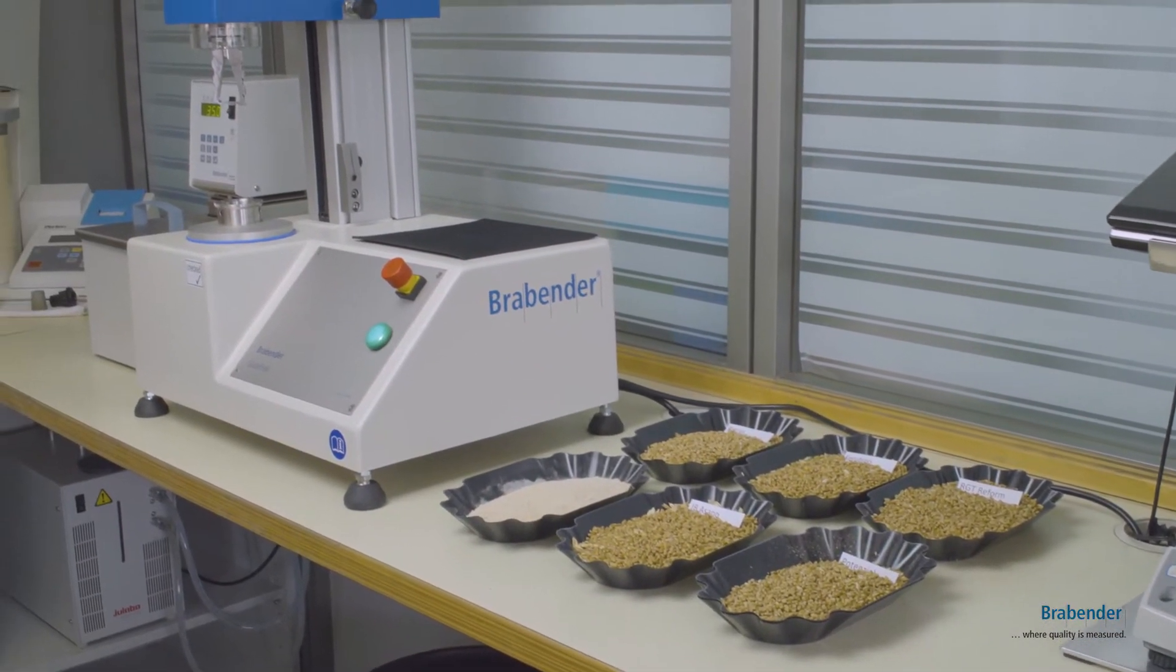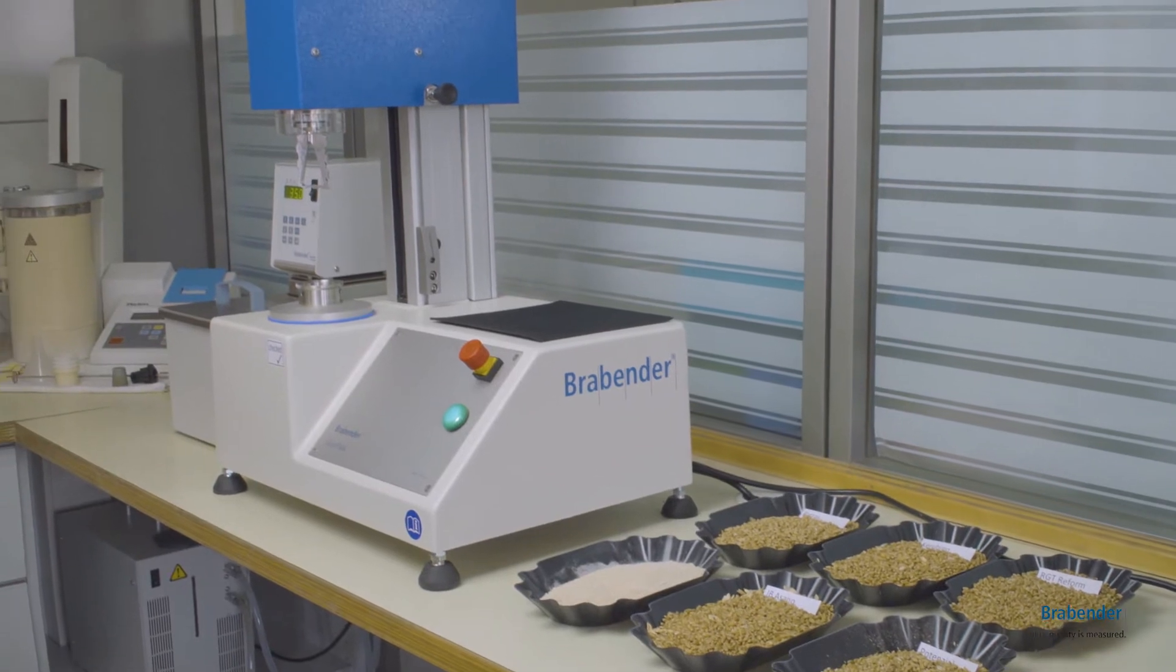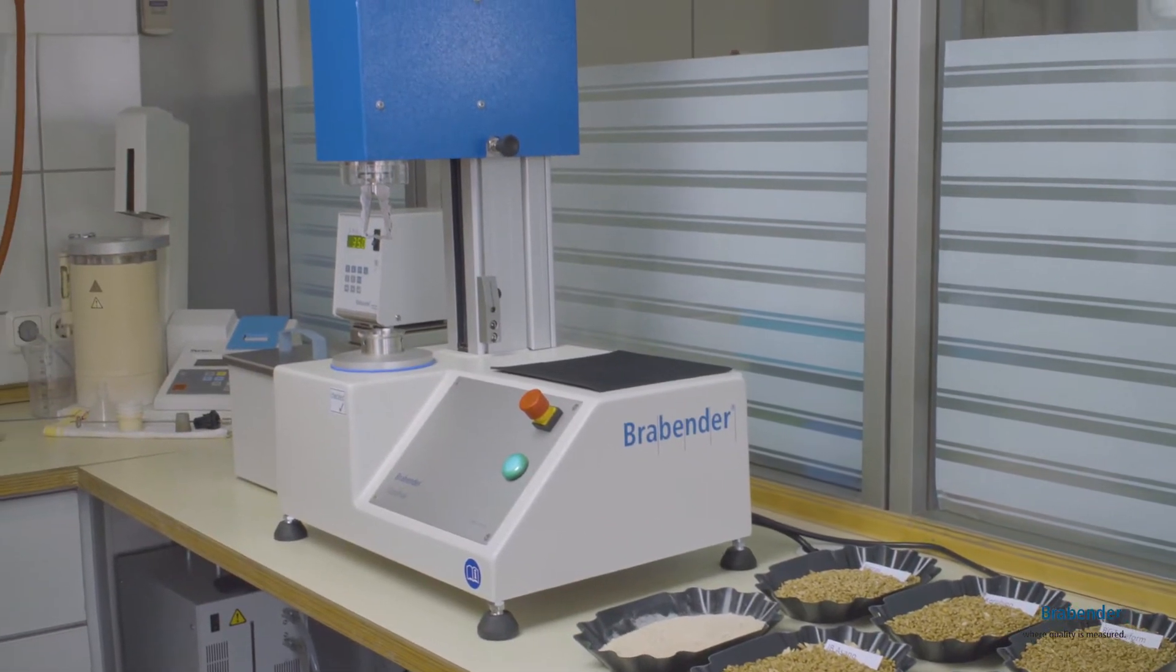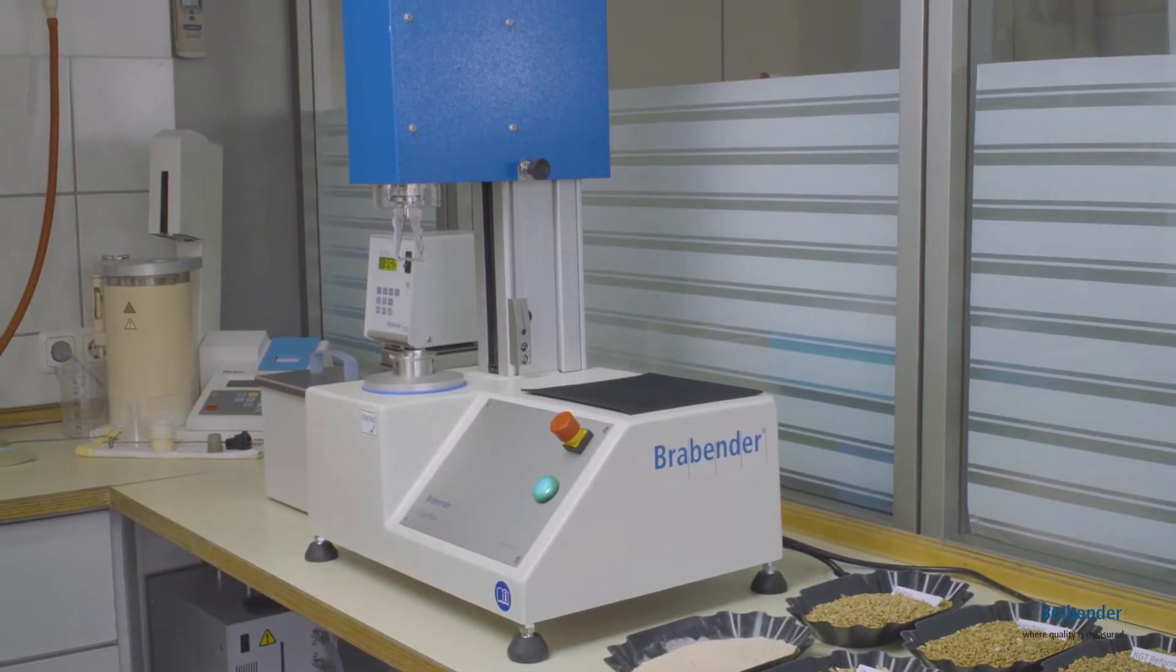The Brabender Gluto Peak measures the aggregation properties of the proteins in a sample to describe their technological and functional qualities.